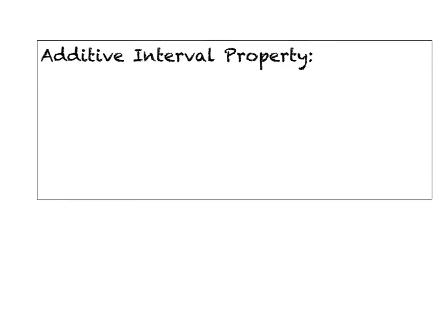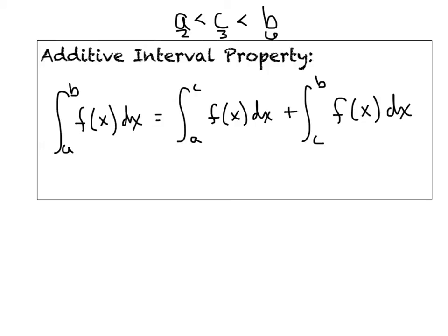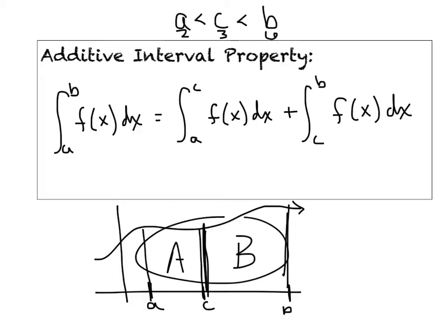Our next special property involves a lot of common sense. Let's assume A is smaller than C, which is smaller than B, and we have an integral from A to B measuring all of that area. You're allowed to break that into two smaller pieces: the integral from A to C — assuming C is some number in between, maybe A was 2, B was 6, and C was 3 — plus the integral from C to B of f(x) dx. If we had some function with A, C, and B marked, all the area from A to C plus all the area from C to B, added together, equals the integral from A to B.